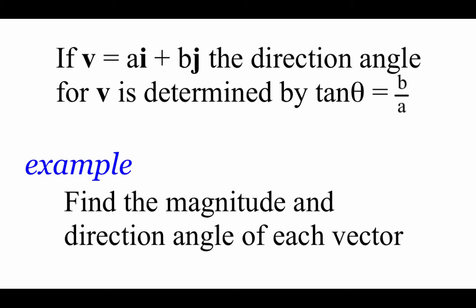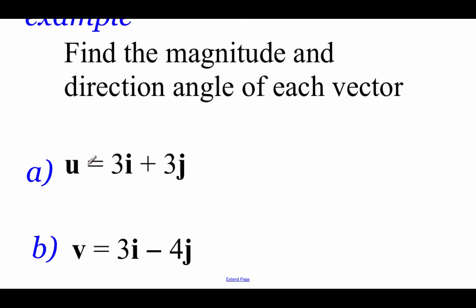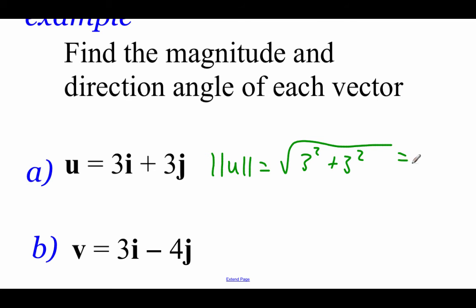If we want to find the direction angle from a vector, for a vector v equal to a times i plus b times j, the tangent of theta equals b over a, and we find theta using inverse tangent. For vector u equal to 3i plus 3j, let's find the magnitude first. The magnitude of u equals the square root of 3 squared plus 3 squared, which is the square root of 18.